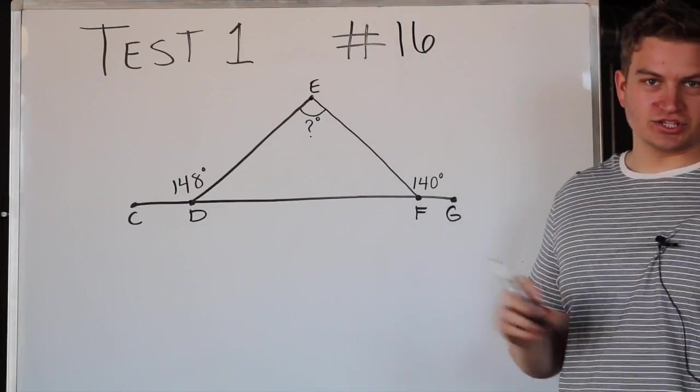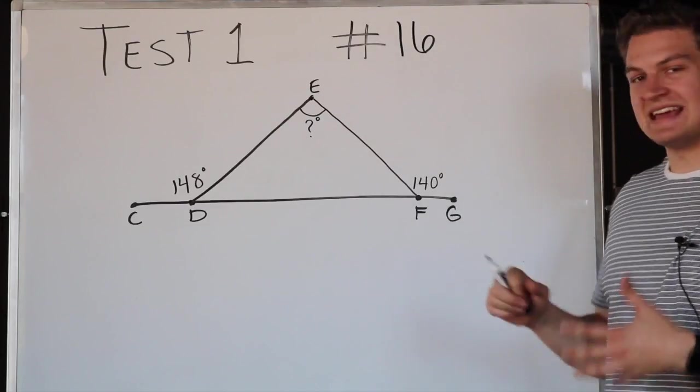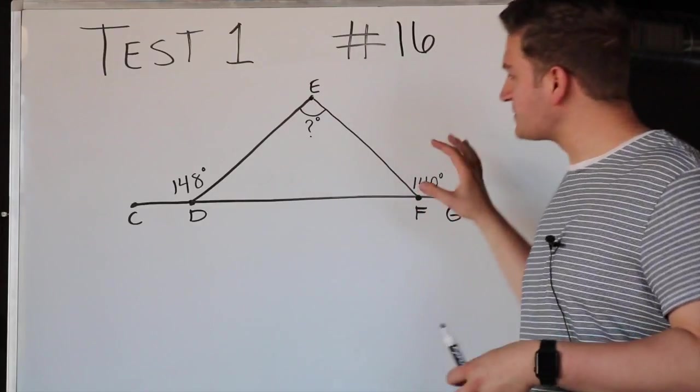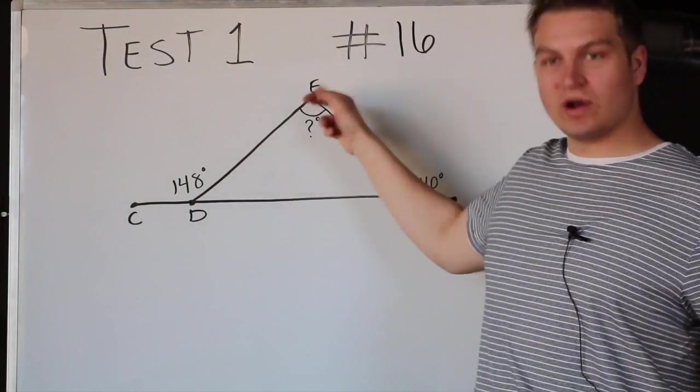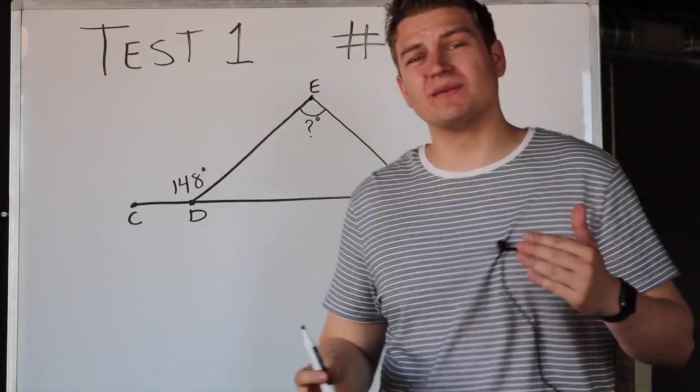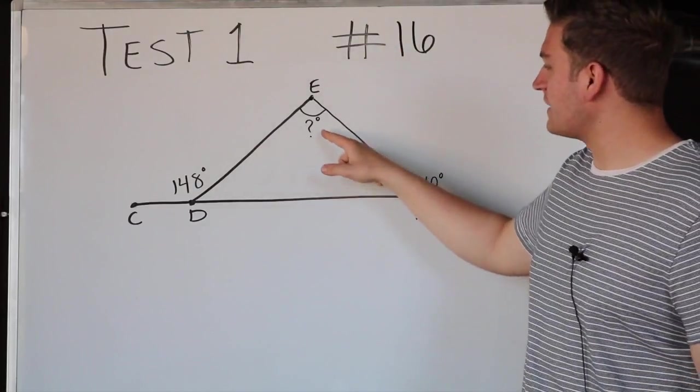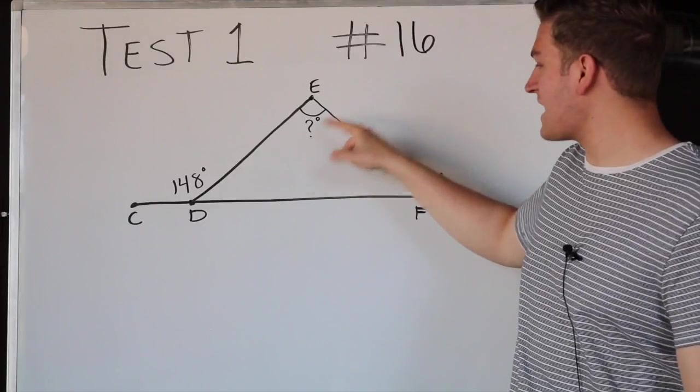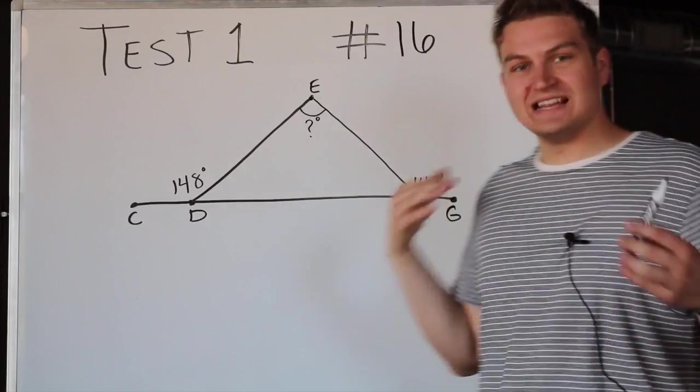Alright, so here is what's happening in this question. They give you this picture with a triangle and some line, the points are all labeled, it gives you a couple of the angles, and bottom line they want you to find the measure of angle DEF in degrees.